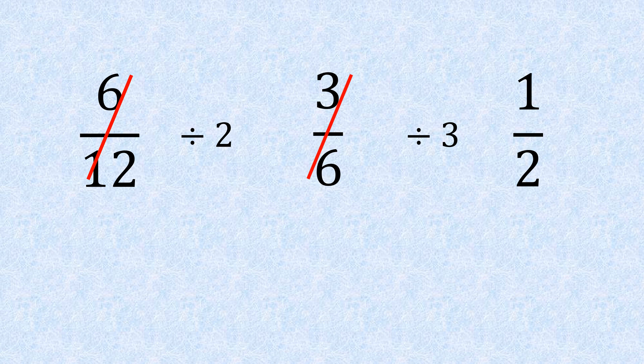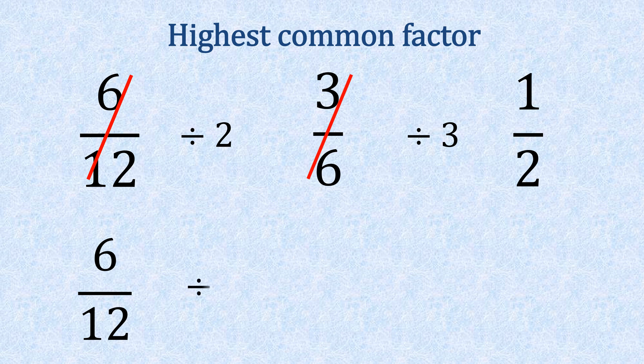If we divided six twelfths by six, this would give us a half straight away because six is the highest common factor.